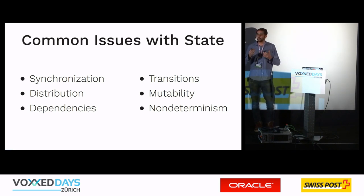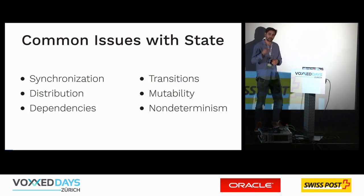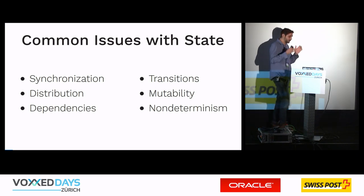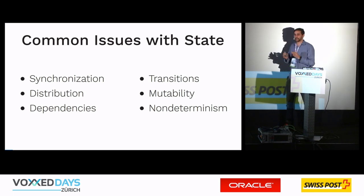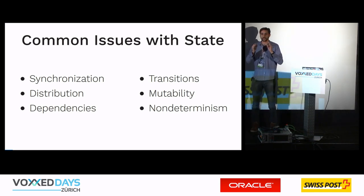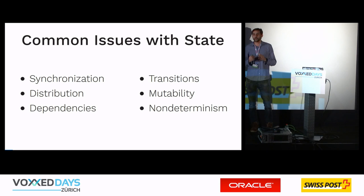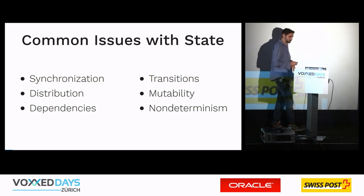Generally, a lot of times in our state architecture it leads to some kind of non-determinism. Over time you cannot really predict what your application state is and how it got there. That's a huge problem, because when you're looking at your application you should always be able to tell exactly what's going on — it should be completely deterministic. That's really not the case with most application architectures.